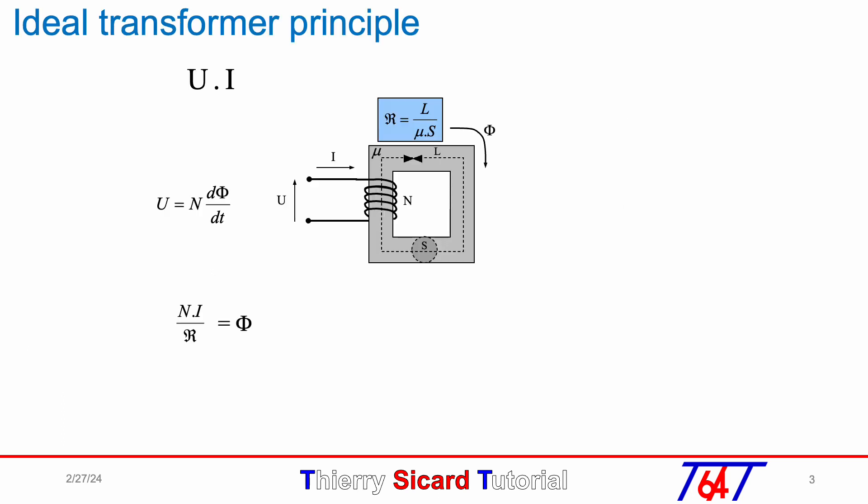If we start with a single coil with voltage U and current I, we will have U equals N dΦ/dt and NI over reluctance equals Φ. Now, if we add a second coil, noted secondary coil, with U_S and I_S...